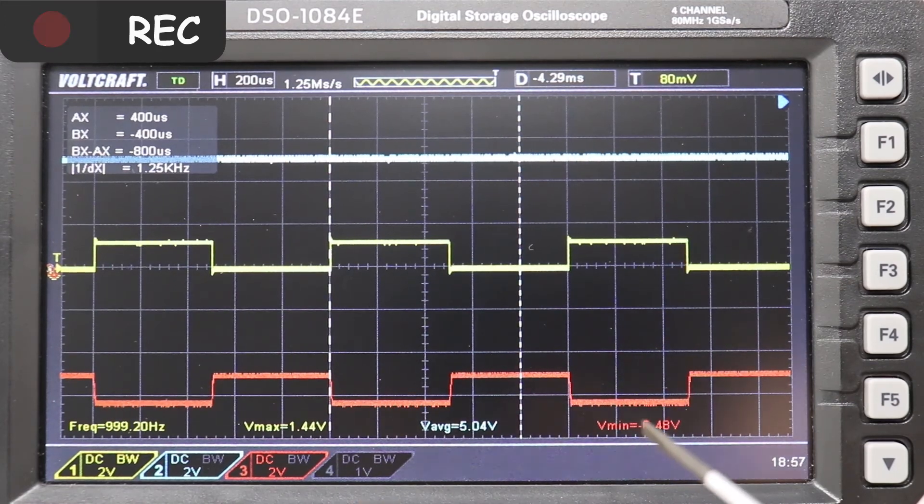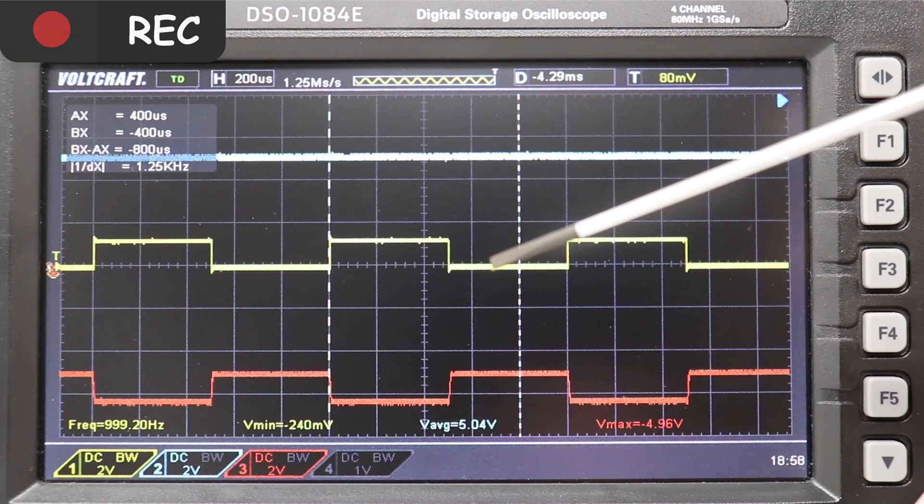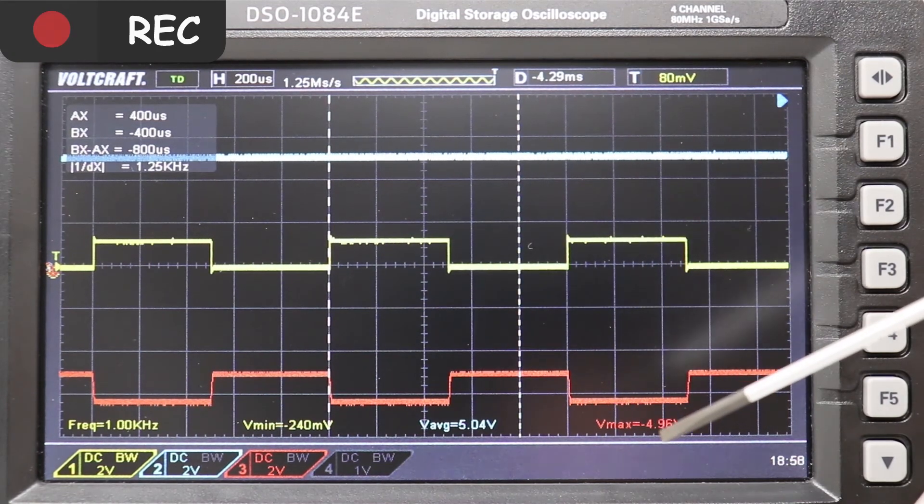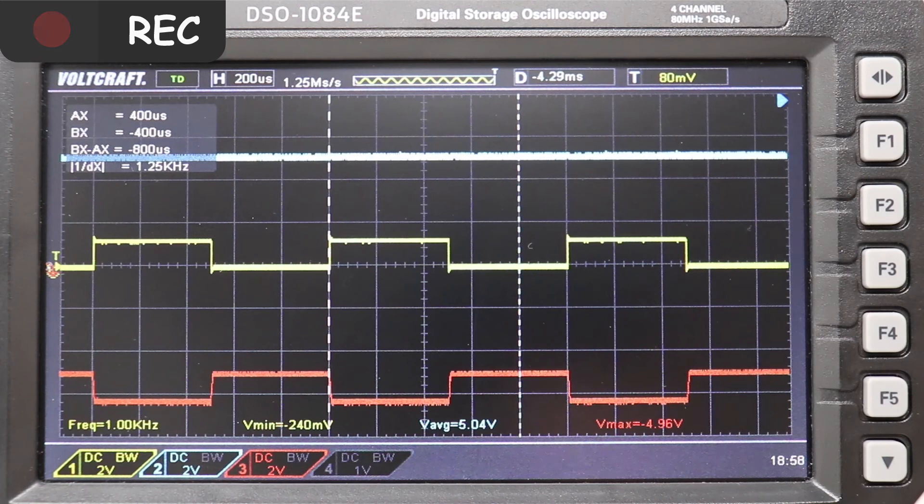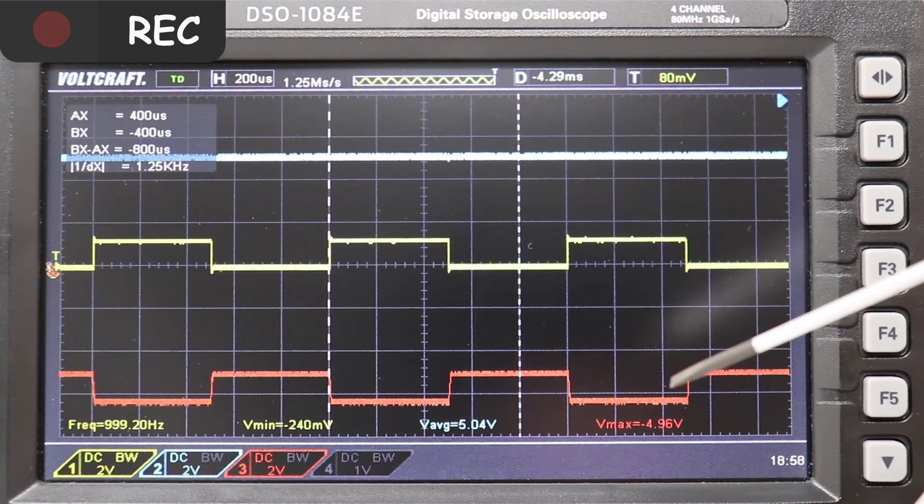On the other hand, repeating the same calculation here gives us minus 5 volts, which is the maximum voltage of the output. So indeed, the adder circuit works perfectly.